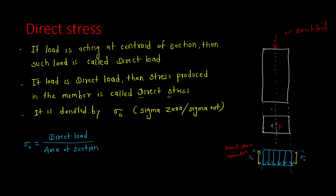If we take this dimension as B and this dimension as D, and give the load the name P, then the direct stress equals the direct load P divided by the area of section. The area here is length into breadth, that is B into D, so direct stress equals P divided by BD.